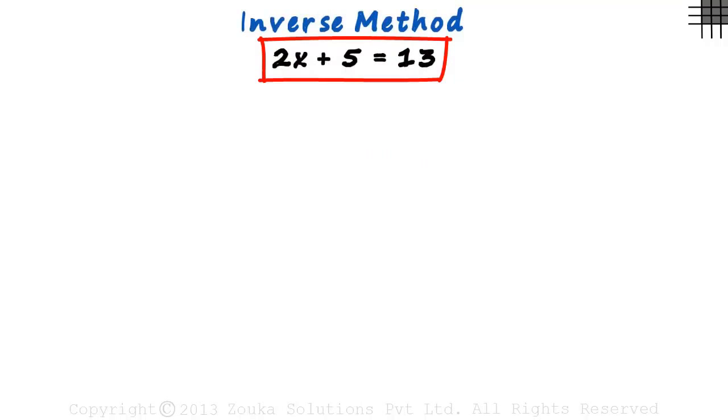When we have to solve such equations, our aim should be to keep only the variable on the left-hand side. We have to eliminate everything else. So our first task should be to eliminate 5.